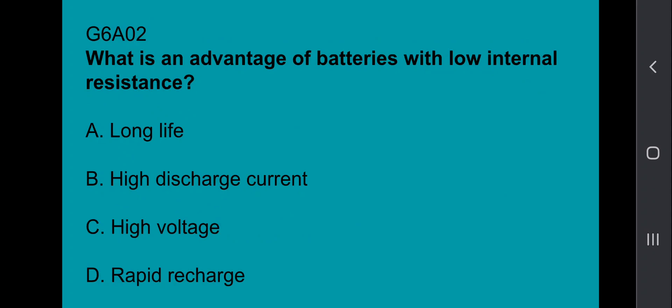G6A02: What is the advantage of batteries with low internal resistance? They have high discharge current.